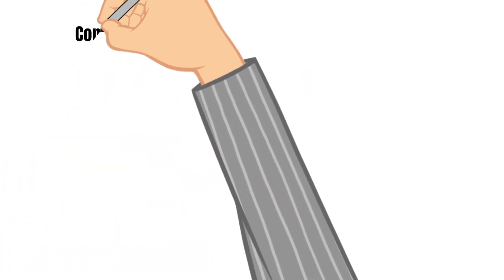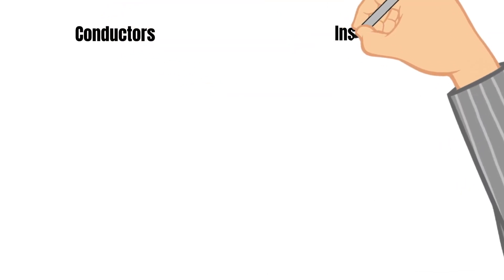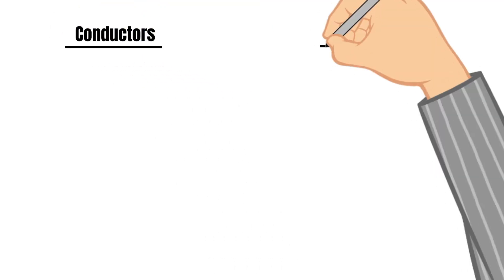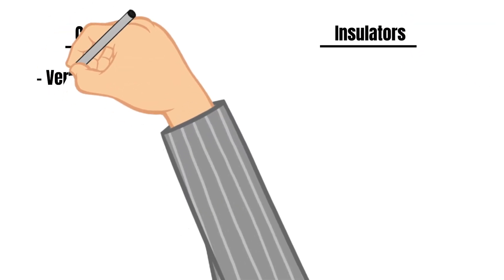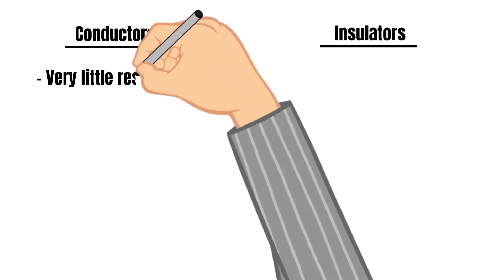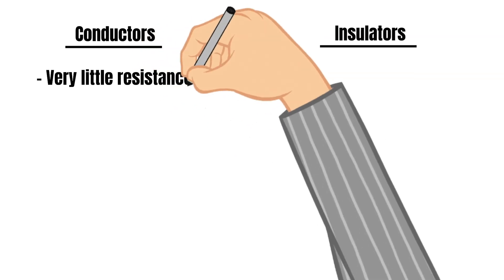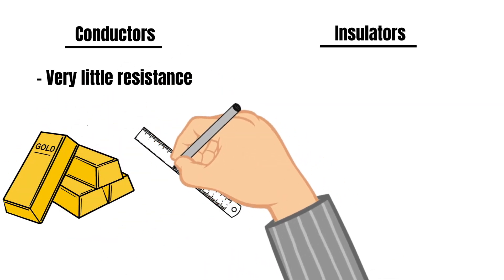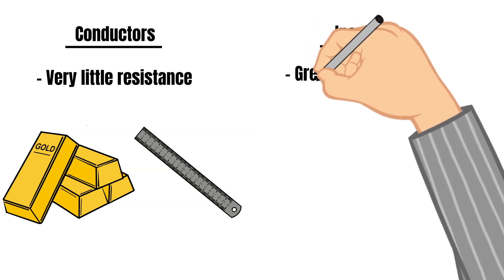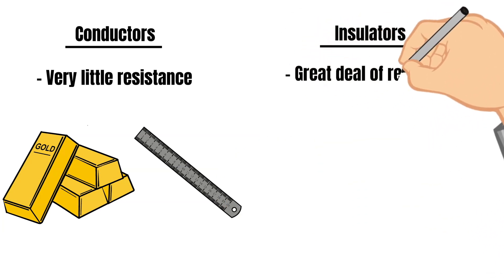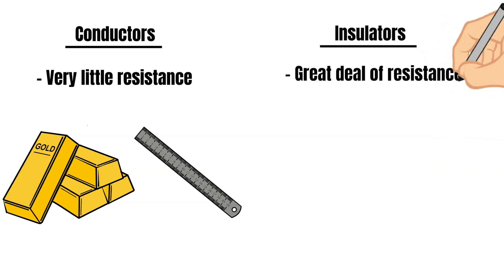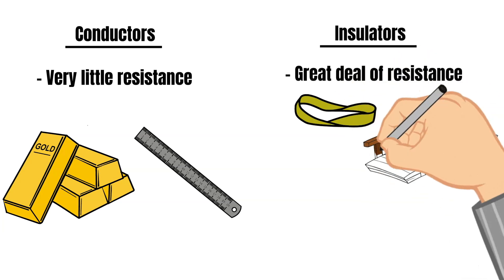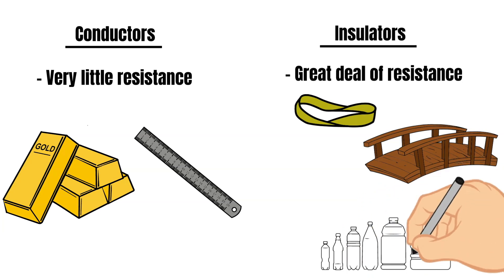All materials fall into one of two categories when it comes to resistance: there are conductors and there are insulators. Conductors offer very little resistance and include materials like gold and aluminum. Insulators present a great deal of resistance and include items like rubber, wood, and plastic.